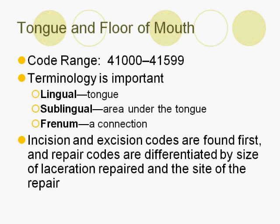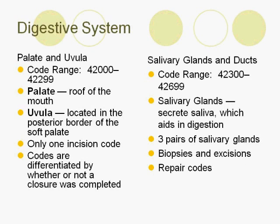Codes for the palate and uvula include only one incision code. The palate is the roof of the mouth, and the uvula is the piece of tissue that hangs at the posterior border of the soft palate. The three pairs of salivary glands secrete saliva. Codes for these include biopsies and excisions, and also repair codes.